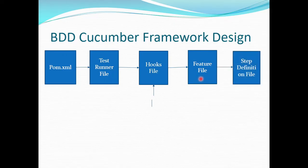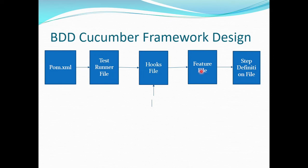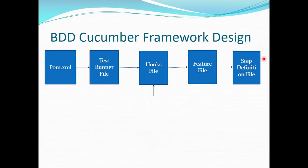Next, execution goes to the step definition file. The step definition file is a .java file where we implement every test step we have designed in the feature file. For each scenario, whatever steps we have defined, all of them must be implemented in the step definition file. From scenario identification, it finds each step and looks for the matching implementation in the step definition file.